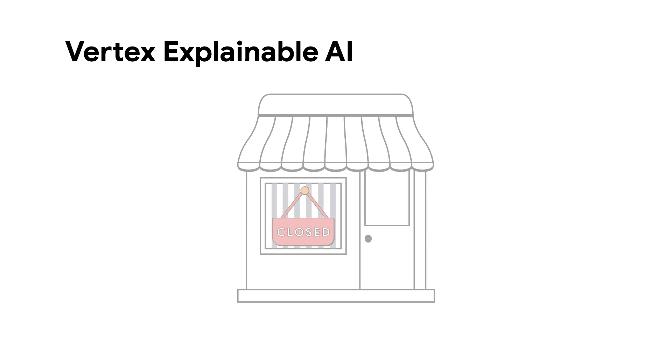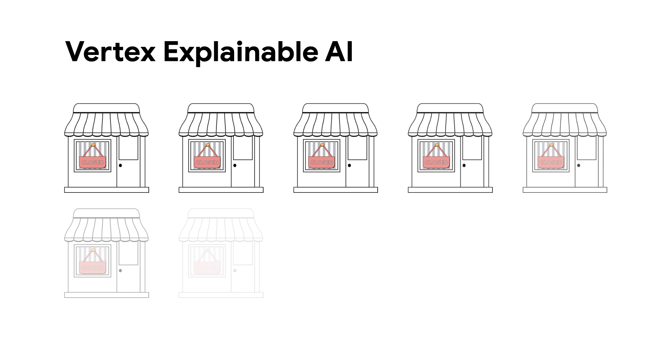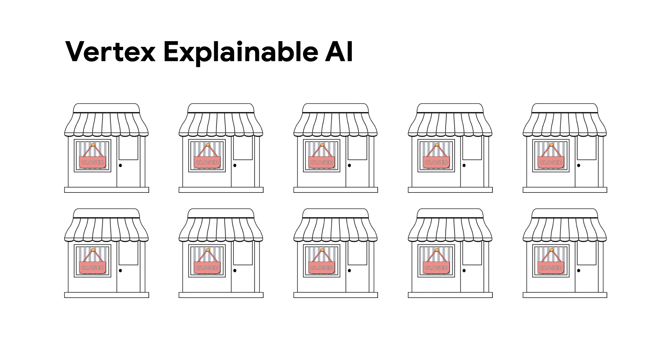With Explainable AI, example-based or similarity explanations provide us with more context and secondary information to help explain and emphasize the differences in our data and explain how the model acts. For example, here are 10 other coffee shops that are closed and the doors are also locked. This includes more context and secondary information for us to better understand differences in our data set and how the model is acting.